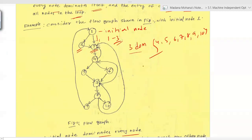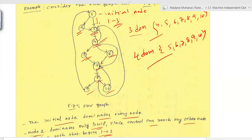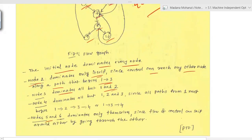Node 4 dominates all nodes except 1, 2, and 3 — so it dominates 5, 6, 7, 8, 9, and 10 — because from the initial node every path compulsorily goes through node 4 to reach those nodes. For nodes 5 and 6, we can't assure every path goes via 5 or via 6, since two alternatives exist, so nodes 5 and 6 dominate only themselves.